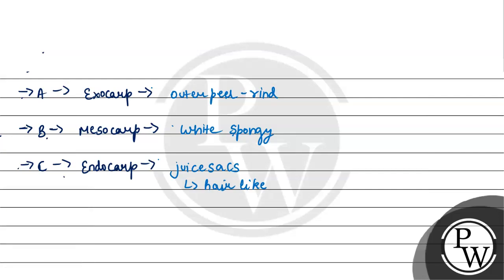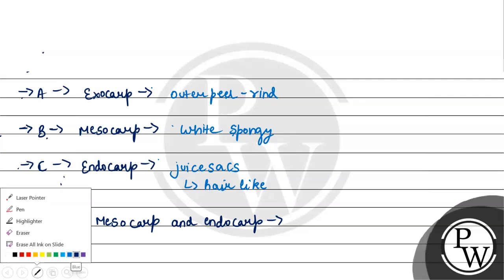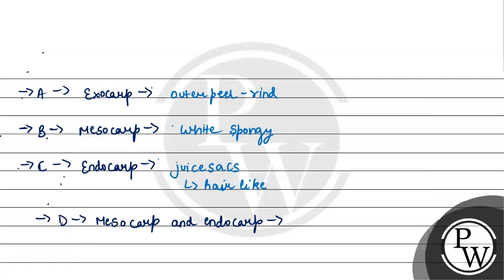Option number D is mesocarp and endocarp. The question asks whether hair-like structures are found in both of these options. हमें पता है, जो mesocarp होता है वो middle most layer होता है, and जो endocarp होता है वो inner most layer होता है. और जो hair-like structures हैं, वो सिर्फ endocarp में ही मिलते हैं.